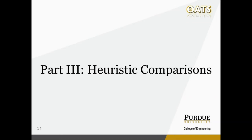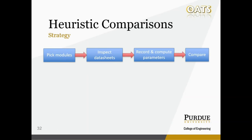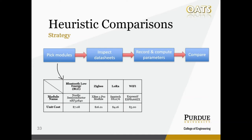In this last part of the presentation, I want to walk you through a step-by-step process to choose a wireless module or protocol based on a real-life deployment scenario in a heuristic approach. Our strategy can be broken down into four steps: first, picking some modules for comparison; second, inspecting the data sheets; third, recording given values and computing needed parameters; and fourth, comparing them according to a real-life scenario. The modules we picked are from four different protocols — BLE, ZigBee, LoRa, and Wi-Fi — and they are all pretty widely available, low-cost modules.